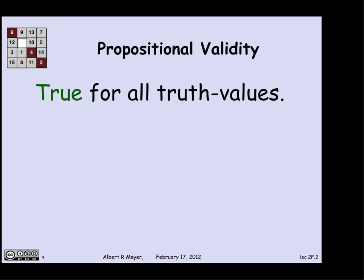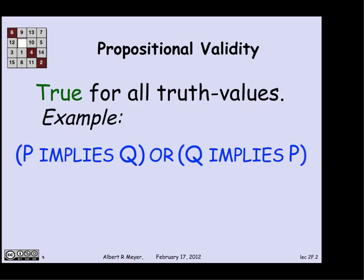Let's remember for propositional validity, if you have a propositional formula with variables taking truth values, ranging over true and false, then a formula is valid when it's true for all possible truth values. Here's an example that P implies Q or Q implies P.